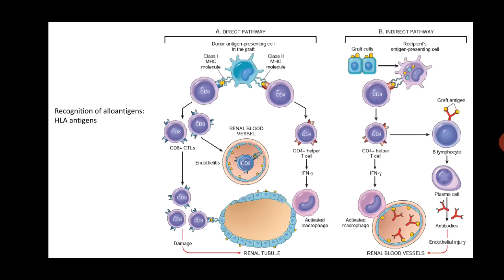The HLA antigens of the donor are recognized by the host immune cells through two mechanisms: the direct pathway and the indirect pathway. In this diagram, anything in blue belongs to the donor and anything in purple belongs to the host. The blue cells are the donor cells and the purple cells are the host cells.